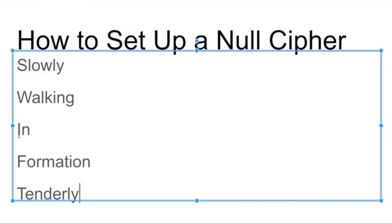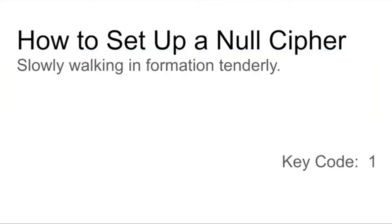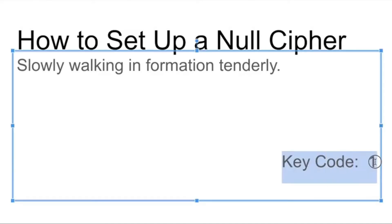The first letter of every word is hiding the main word. In looking at the sentence, you cannot really see that there is something hidden in there. The only clue you have is key code number one, which means that the first letter of every word is hiding something.